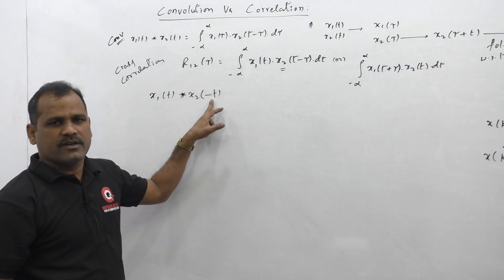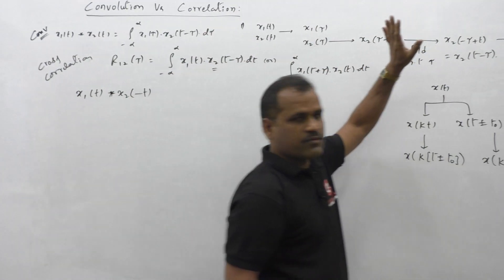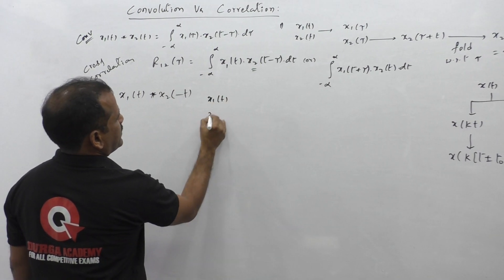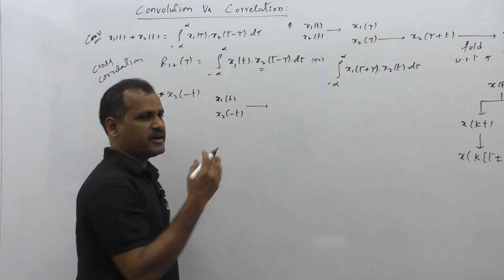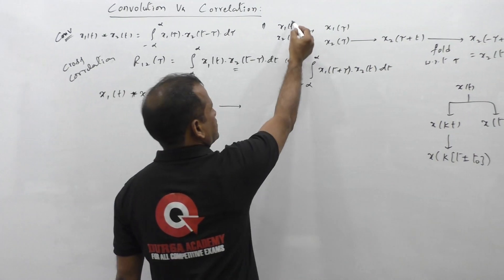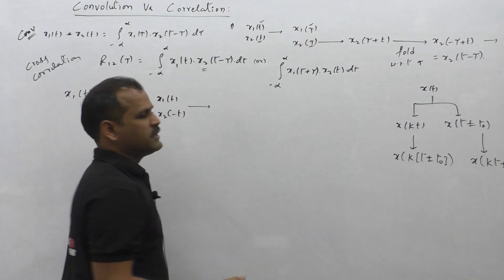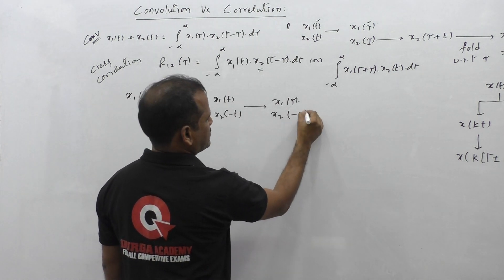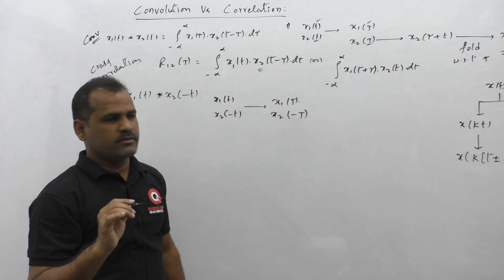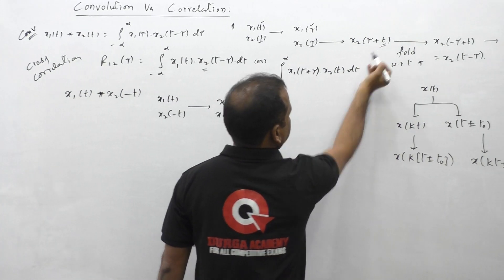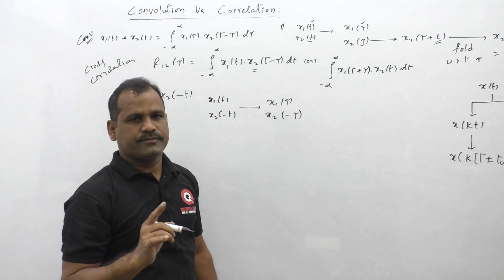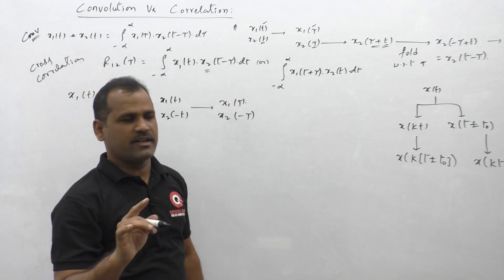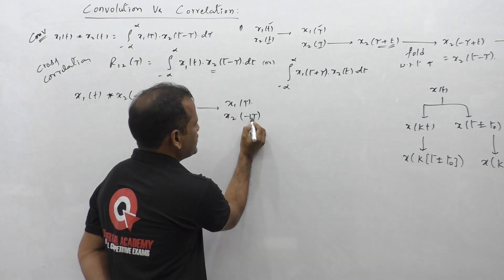So with x2(-t) taken, let us perform the convolution of these two functions step by step. First step: we change the time index from t to tau in both functions. So x1(t) becomes x1(tau), and x2(-t) becomes x2(-tau). In the second step, the tau should be shifted by plus t — left shifting by tau + t. But observe that this function x2(-tau) is already scaled with -1, meaning it is in the form with k = -1.